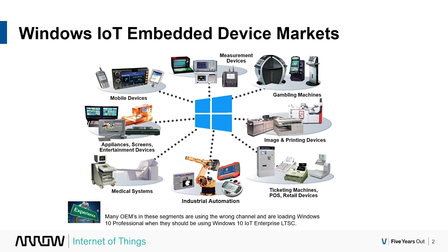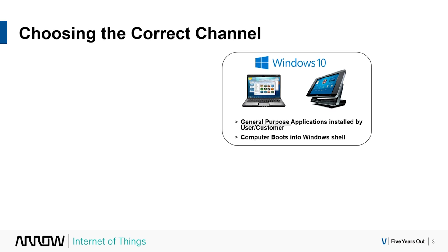If you're an OEM and you're building a dedicated appliance of any kind, from any of these industries, you should be using IoT Enterprise — and we'll talk about the reasons why. If you're building a general use computer, that's when you would be using regular Windows 10 Home or Windows 10 Pro — a general purpose, everyday computer used for whatever you want, where the customer installs whatever they want.